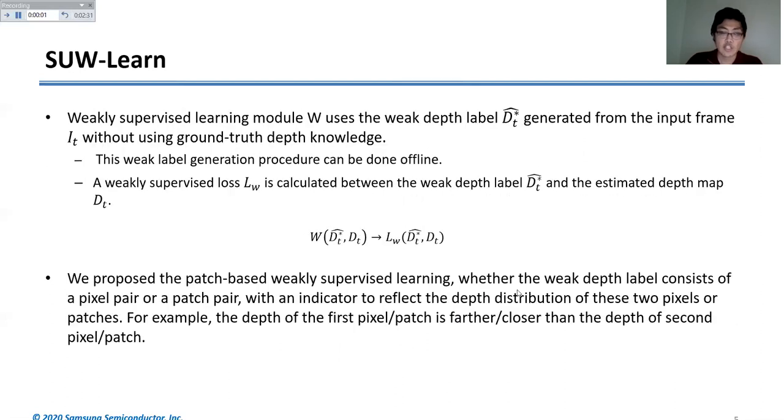The idea of the weakly supervised learning module W is that we can select two pixel pairs or two patches, which is our proposal. We can say that patch 1 should be farther or closer than patch 2. We check whether this relative depth relationship can be found in our estimated depth map D_t. This means the accuracy of D_t can be further refined.